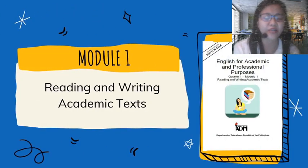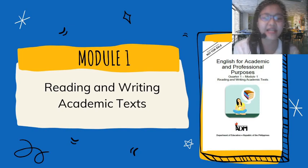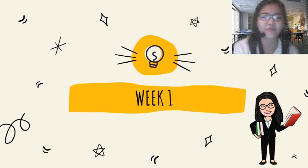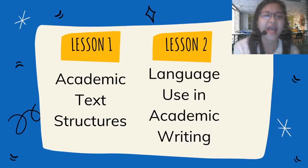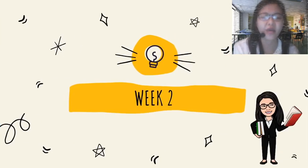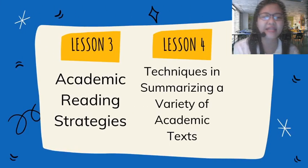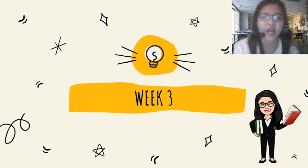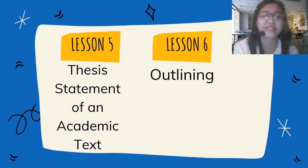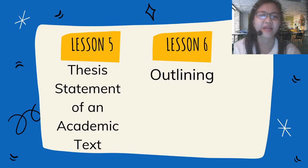We will start this subject with Module One, which is entitled Reading and Writing Academic Texts. Module One is good for three weeks and has six lessons. In week one, you will have Lesson One, which deals with academic text structures, and Lesson Two, which deals with language use in academic writing. In week two, you will have Lesson Three, which delves into academic reading strategies, and Lesson Four, which delves into techniques in summarizing a variety of academic texts. In week three, you will have Lesson Five, which focuses on the thesis statement of an academic text, and Lesson Six, which focuses on outlining.